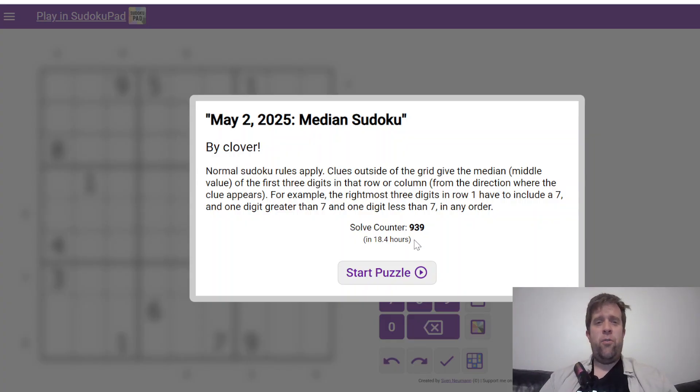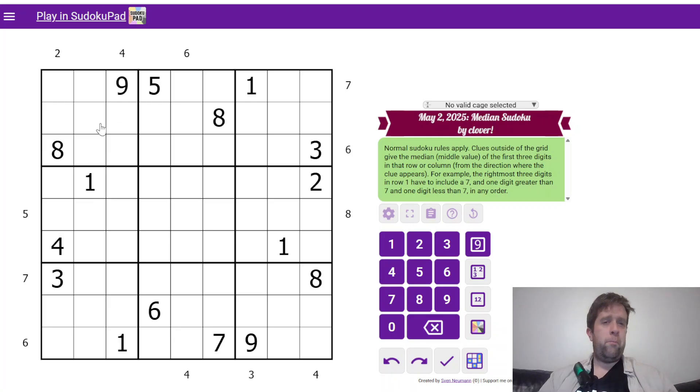This is median sudoku. Normal sudoku rules apply, so each box, each row, and each column must contain the digits one to nine once each. Clues outside the grid, like that four, that two, etc., give the median or middle value of the first three digits in that row or column.